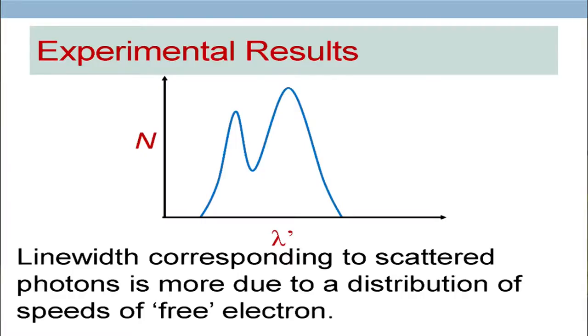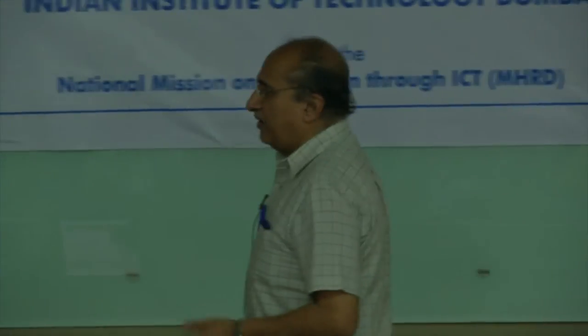If you take lambda-prime and you know what is your original lambda, then lambda-prime minus lambda corresponding to this high lambda peak actually satisfies the Compton effect expression. However, there are two interesting observations. First, the width of the broader peak is much larger in comparison to the original peak. Second, you find two peaks and the lower lambda peak essentially matches with the original lambda.